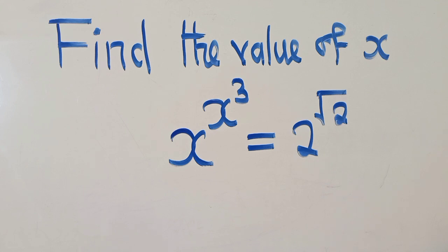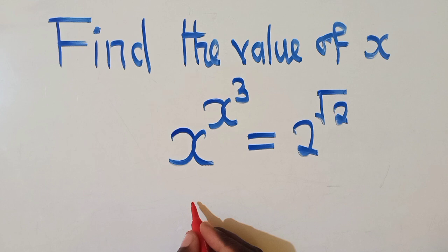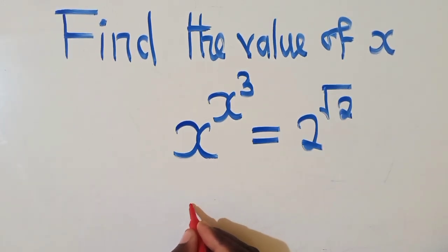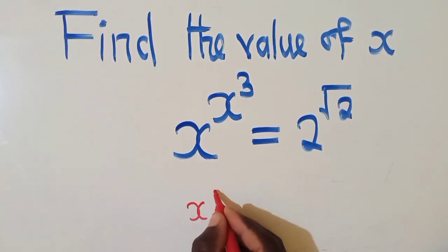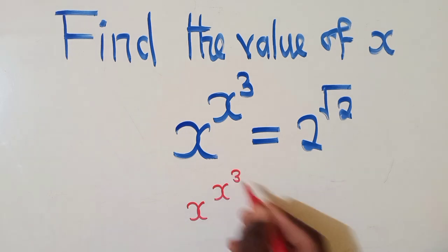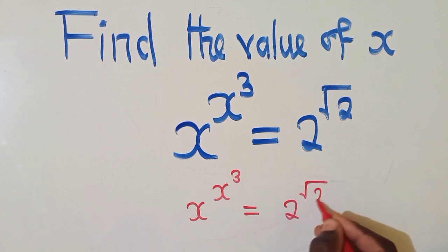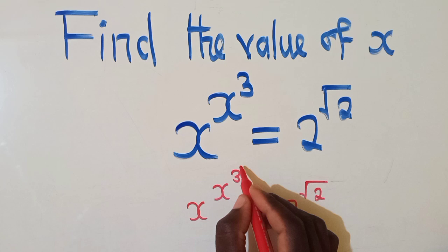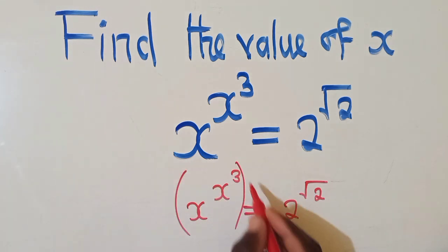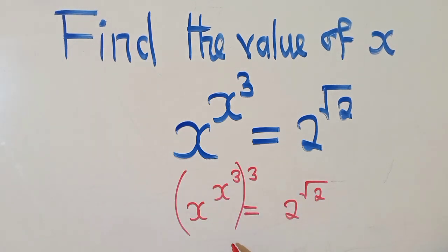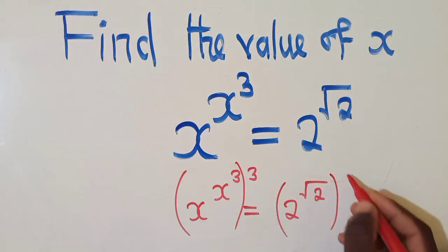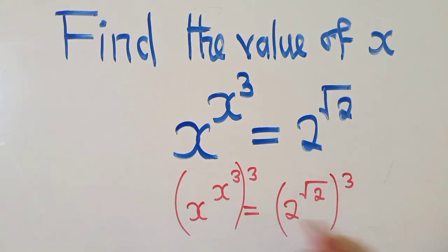Now we don't just write - we have to follow some certain rules, and mostly it's the rules of indices. So x power x power 3 here is equal to 2 power root over 2. Basically, after doing this, you just apply the power 3 here, and the same thing that is done to the left side must be done to the right side.